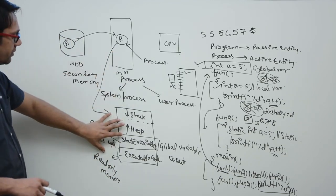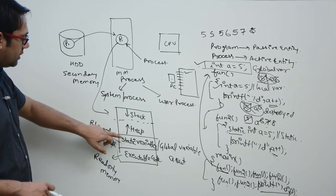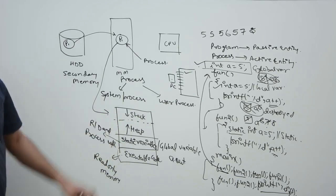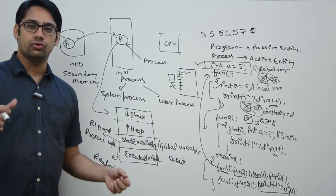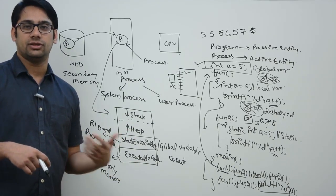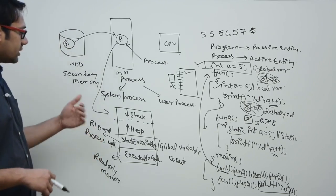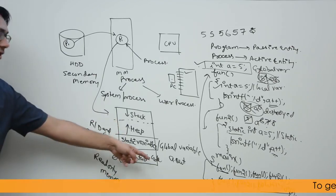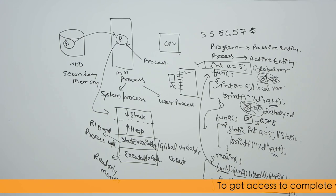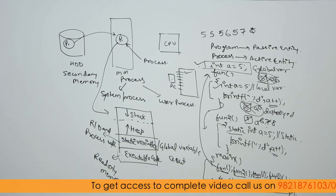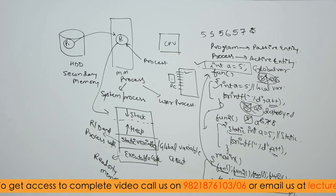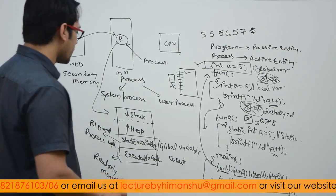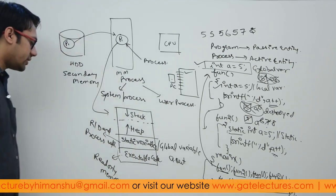To summarize, a process is allocated these memory areas: a stack, a heap, a static/global variable area (read-write), and an executable code area (read-only). There is no physical separation between stack and heap — they grow from opposite directions and whichever needs more memory takes it. If a program tries to cross the boundary of this process memory, we get a segmentation fault.